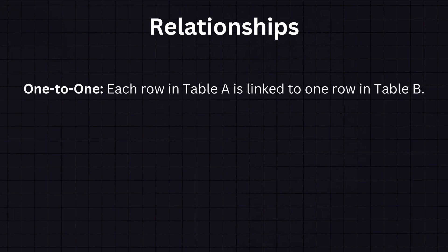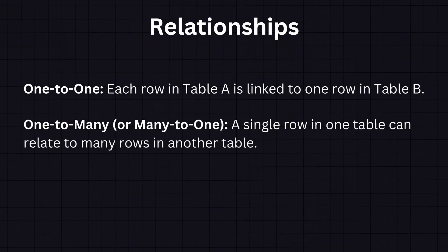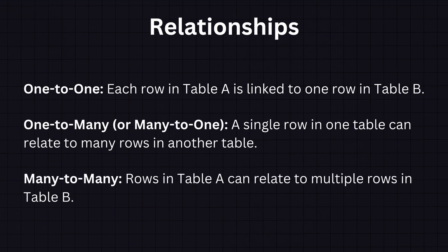To connect multiple tables together we have relationships, which define how tables relate to each other. The most common types are one-to-one, where each row in table A is linked to one and only one row in table B; one-to-many or many-to-one, where a single row in one table can relate to many rows in another table; and many-to-many, where rows in table A can relate to multiple rows in table B and vice versa.